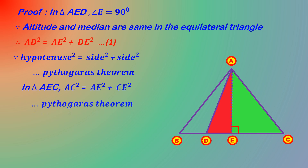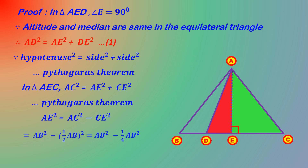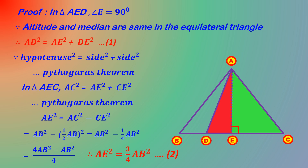AC is the hypotenuse and AE and EC are the sides, by Pythagoras theorem. Transposing: AE square is equal to AC square minus CE square, which equals AB square minus (1/2 AB) squared, equals AB square minus 1/4 AB square, equals 4 AB square minus AB square all over 4. Therefore AE square is equal to 3/4 AB square — this is equation number 2.